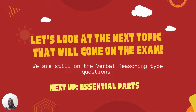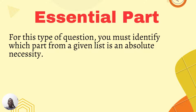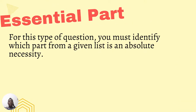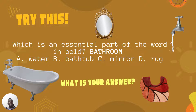Let's look at our next topic that will come on the ability test examination. We are still in the verbal reasoning type of questions. Next up is essential parts. For this type of question, you must identify which part from a given list is an absolute necessity. Let's look at the example. Which is an essential part of the word in the bowl? The word is bathroom. A. Water, B. Bathtub, C. Mirror, or D. Rug. What is your answer?